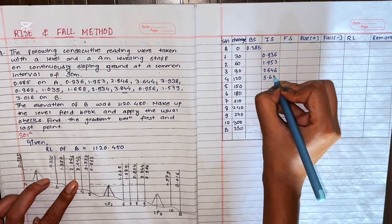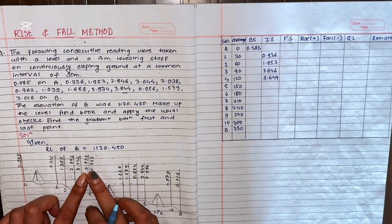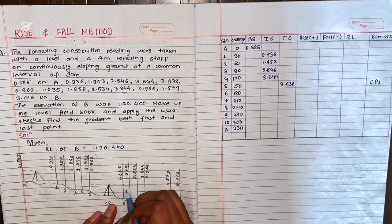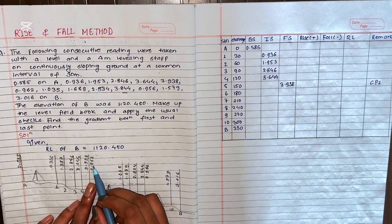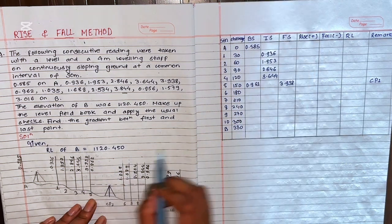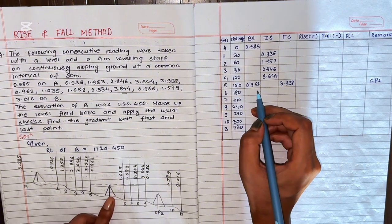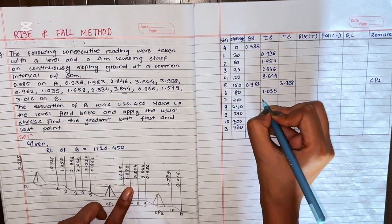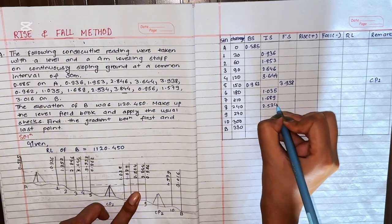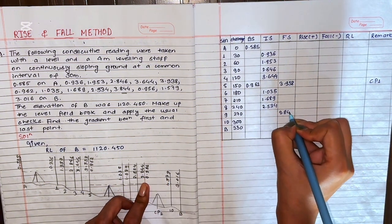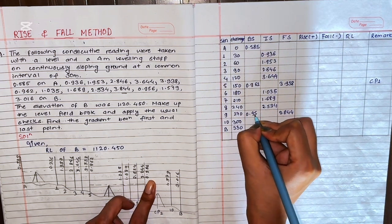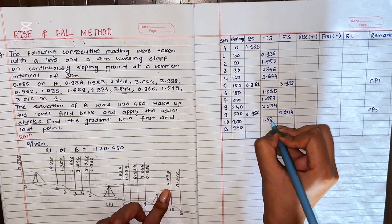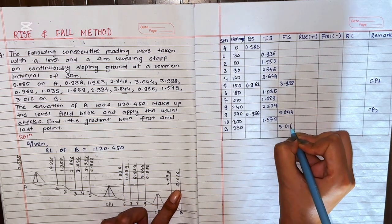The intermediate sights from the first setup are 0.936, 1.953, 2.846, and 3.644, and the foresight is 3.938 — this is changing point 1. After changing, the backsight is 0.962. There are two readings at station 5: the foresight before changing and the backsight after changing. The intermediate readings are 1.035, 1.689, and 2.534, and the foresight is 3.844 — this is changing point 2. The backsight at CP2 is 0.956, intermediate is 1.579, and the last foresight on B is 3.016.